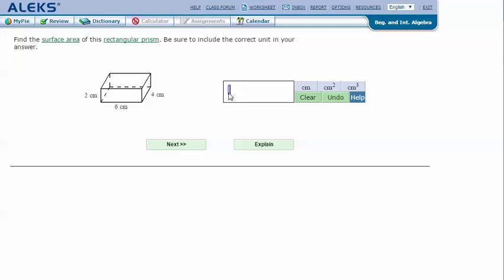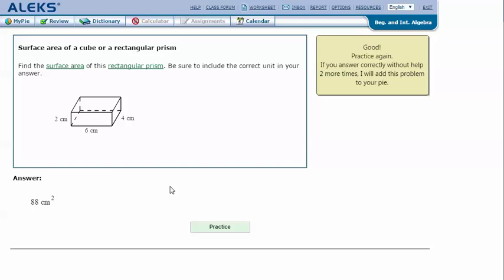In my Alex screen, type in the answer that I got in my notes. And it's cubic centimeters since we're talking about area. And click next. And it says that I got the correct answer. Thanks for watching.